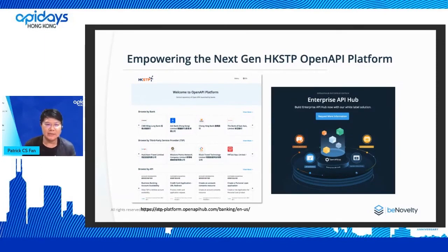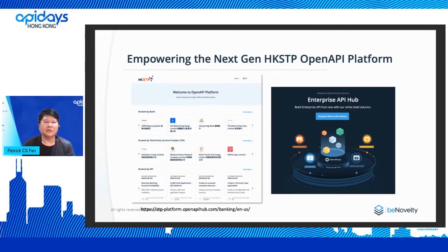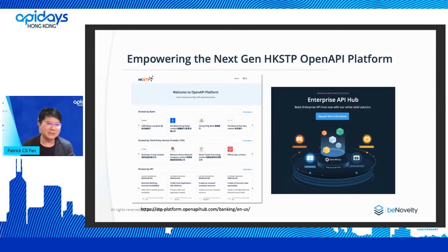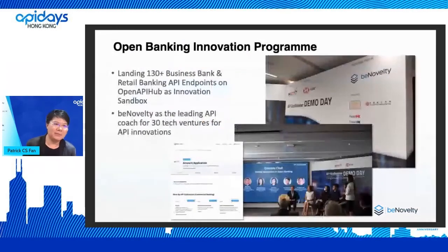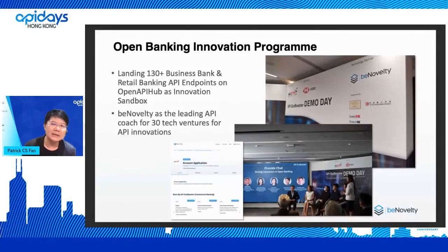We're also working with the ecosystem quite closely — our open API platform is working with a science park to empower their next-generation open API hub platform, so they can help collaborate their staff and fintech power without spending a lot of effort and time building their infrastructure. Previously we also had one of the banks do an open banking innovation program called API Ecosystem Eco Booster.